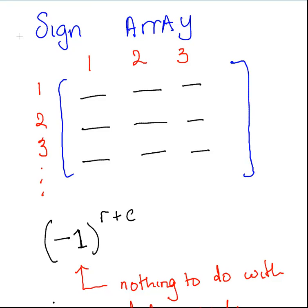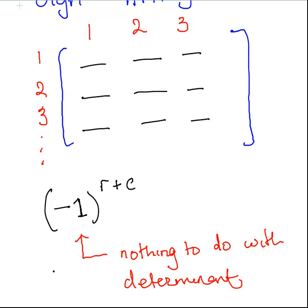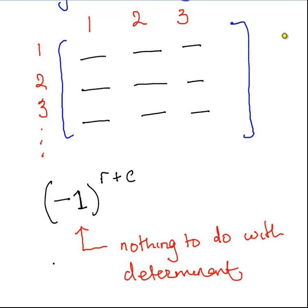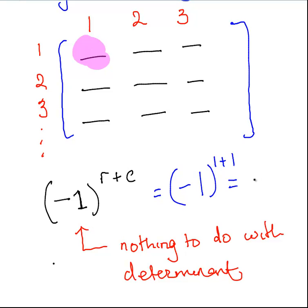What I'm going to do first is talk about this signed business. Let's say this is the position of the first element — the first row, first column. We're not interested in the value of that element; we're interested in its sign, is it plus or minus. We look at its row number and column number. For this cell, the row number is 1, the column number is 1. We calculate minus 1 to the power of the sum of the row number and the column number: that is minus 1 to the power of 1 plus 1, which is equal to plus 1. So this position will be plus 1. This is the sign array.